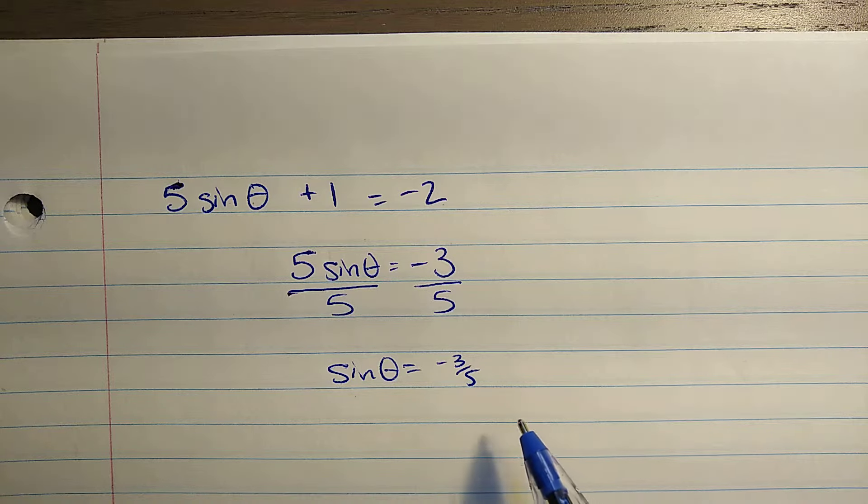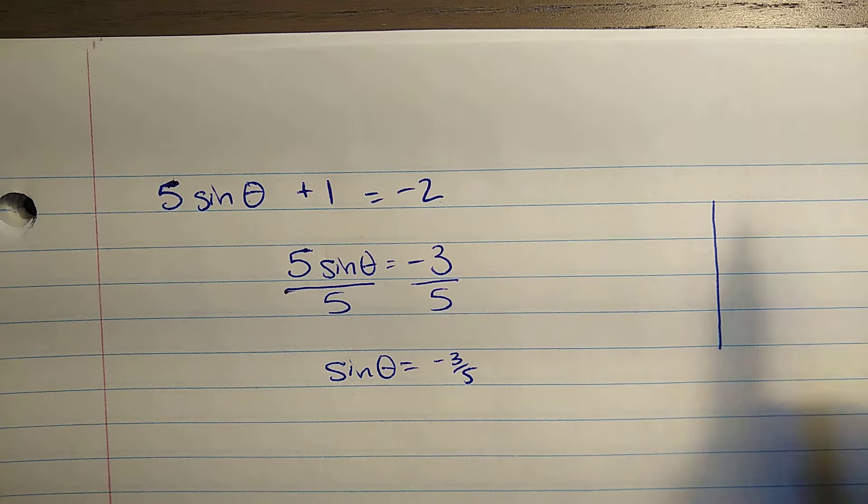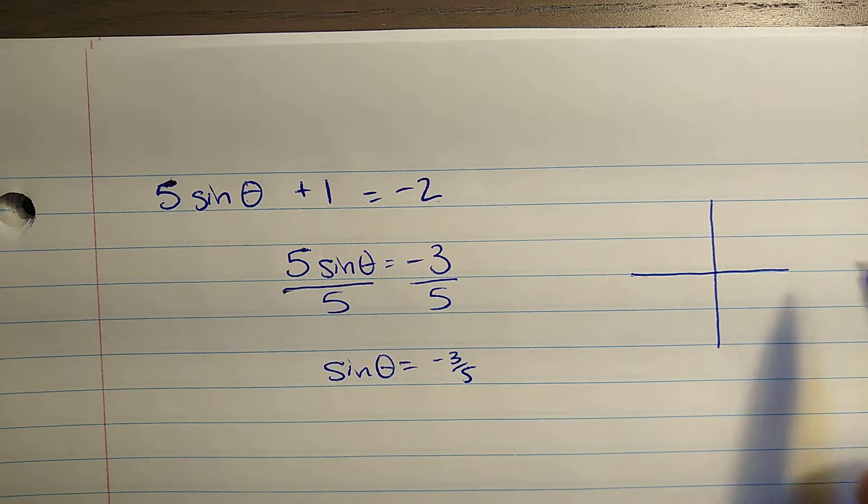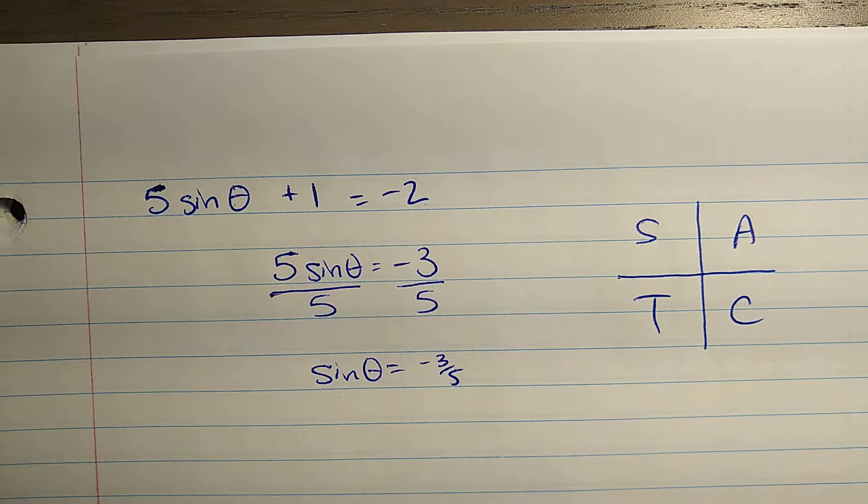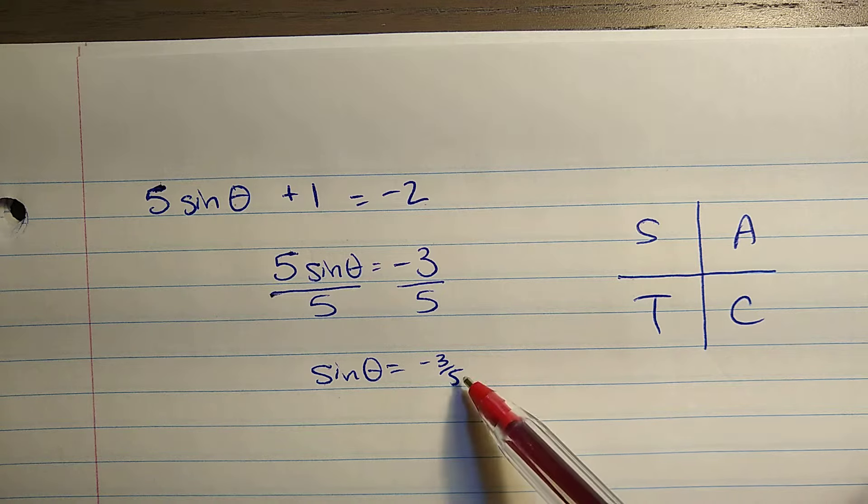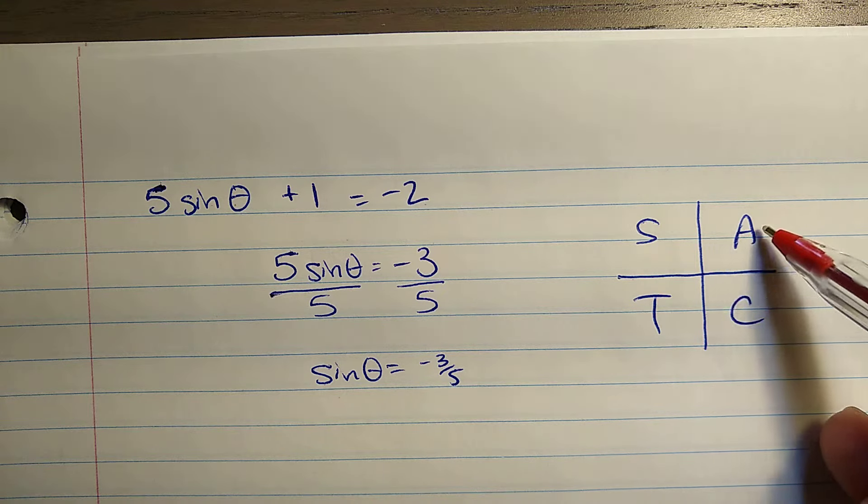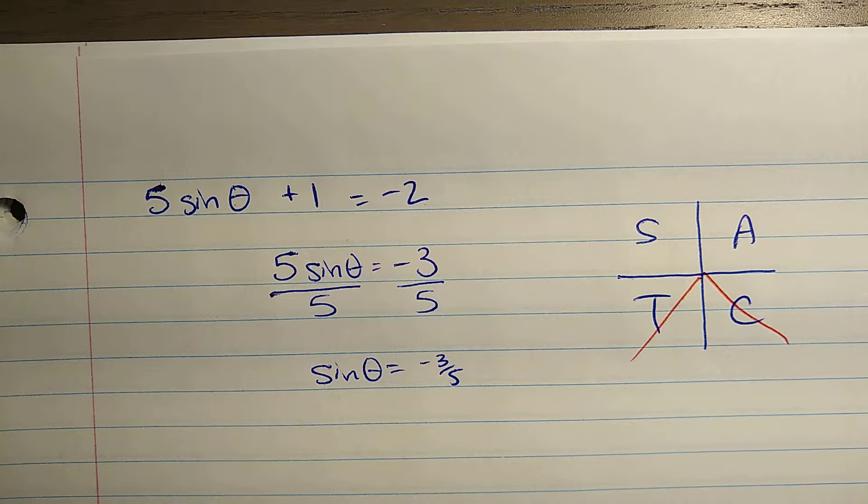And I have this equation. Now notice how similar that is to what we worked with in the last example. Primary trig ratio equals a number. CAST rule. And I recommend just draw this out for yourself as you work. Sine has to be a negative number. Sine, everything's positive here. Sine is positive there. That means I'm going to have something there and something there.